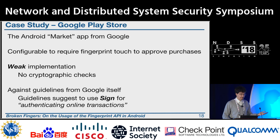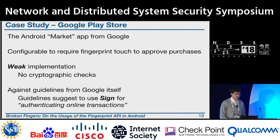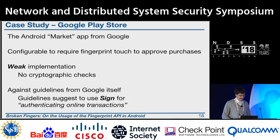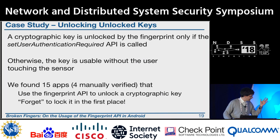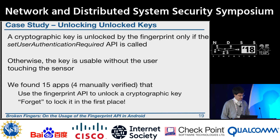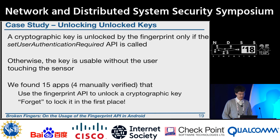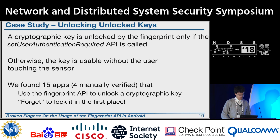For example, the Google Play Store app — installed on virtually any Google device — can be configured to require a fingerprint touch to approve purchases. Our tool correctly identified this app as using the API in a weak way, which is actually against Google's own guidelines that suggest using the sign approach to authenticate online transactions. Another interesting case: some apps implement all the cryptography but forget to lock the key in the first place — they have code to unlock a key, but the key was never locked. This suggests the current API may be too complex, causing developers to make mistakes.